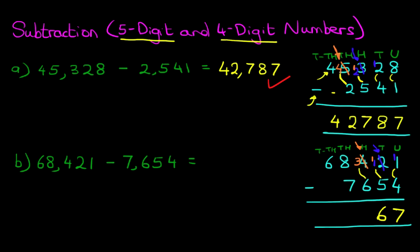We're now on to the hundreds column. We've got 3 minus 6. This is something we cannot do because 3 is smaller than 6, so we take 1 from the thousands column. Let's cross out the 8; 8 minus 1 is 7. The 1 we have taken away, we add to the hundreds column, so the hundreds column has now become 13 minus 6. 13 minus 6 is 7. Now the thousands column: 7 minus 7 is 0. And lastly, the ten thousands: 6 minus 0 is 6. That is our answer — it is 60,767. We get a nice big tick.